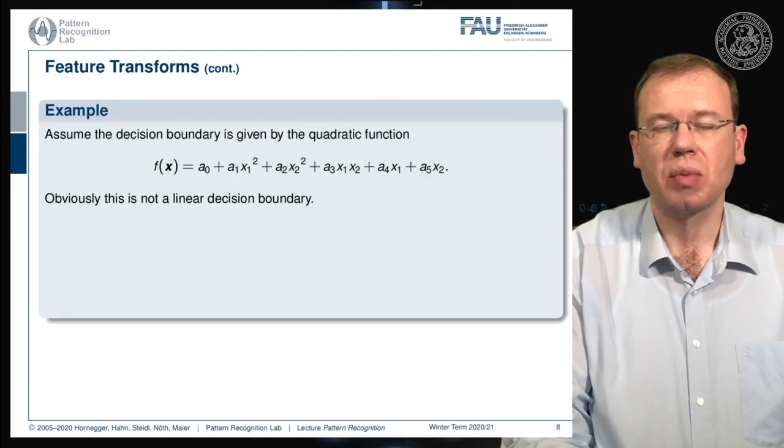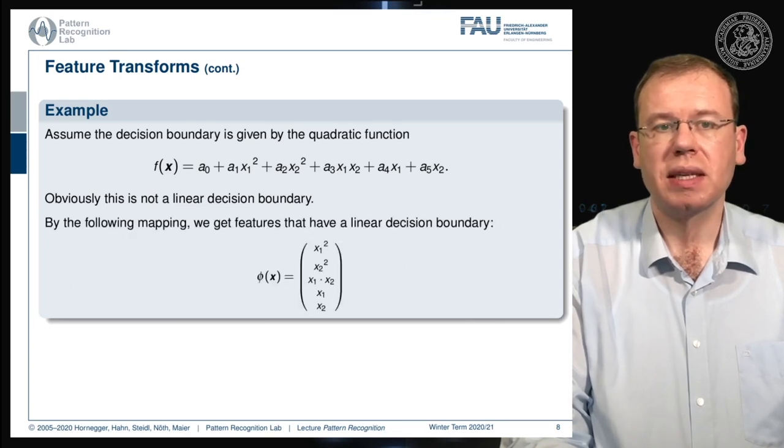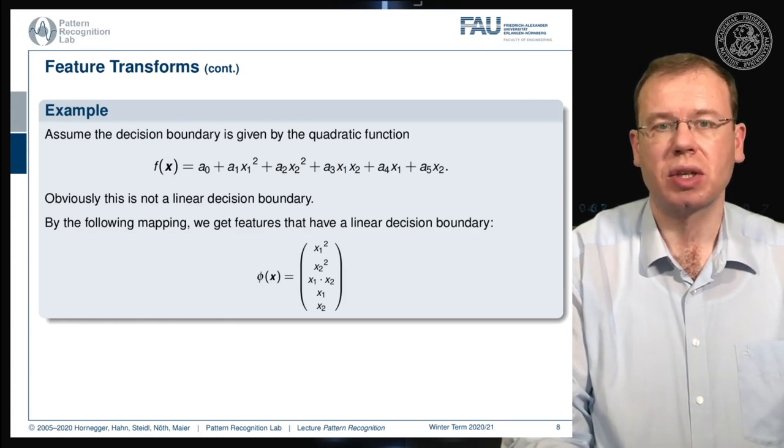We've seen that the decision boundary given by quadratic function is obviously not linear but because the parameters in a are linear we can map this to this high dimensional feature space in order to get linear decision boundaries in this transformed high dimensional space.